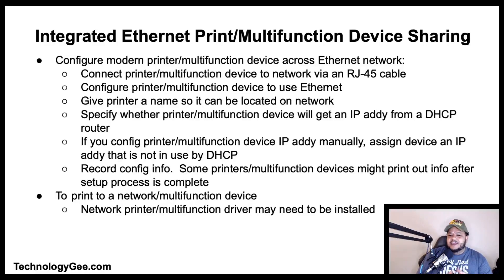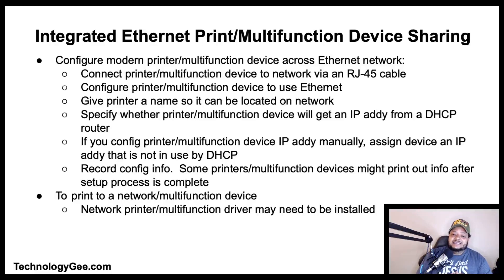Here are the basic steps to configure a modern printer or multifunction device for shared access across an ethernet connection: connect the device to the network via an ethernet cable such as an RJ45 cable; configure it to use ethernet; give it a name so it can be located on the network; specify whether it will get an IP address from DHCP. If configuring manually, assign an IP address not in use by DHCP, then record the configuration information. Note that a network printer driver may need to be installed instead of the standard print driver.